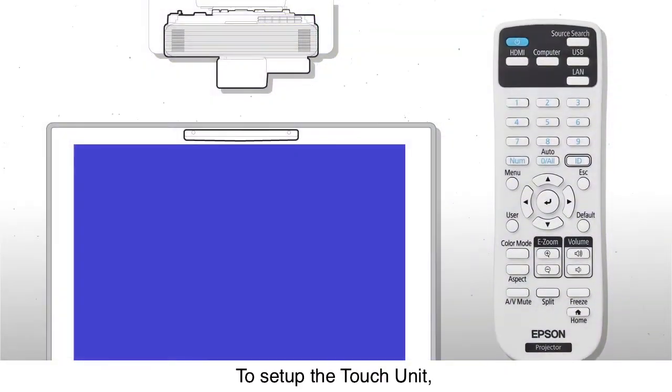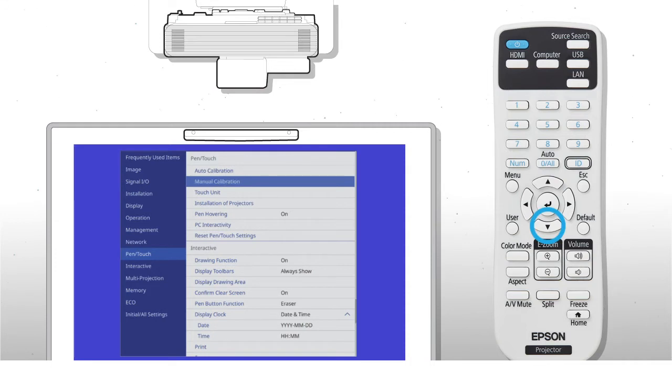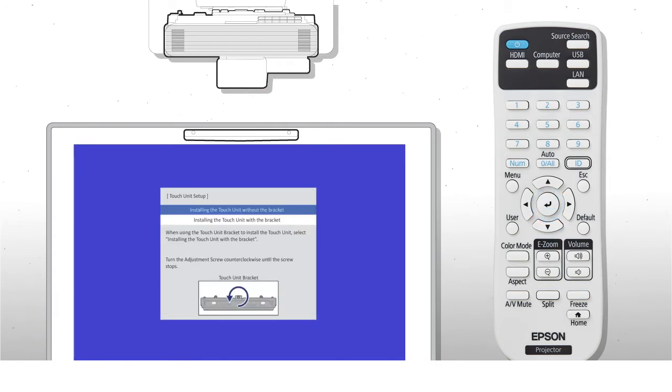To set up the touch unit, press Menu, then select Pen Touch, Touch Unit, Touch Unit Setup, and Installing Touch Unit without the bracket.